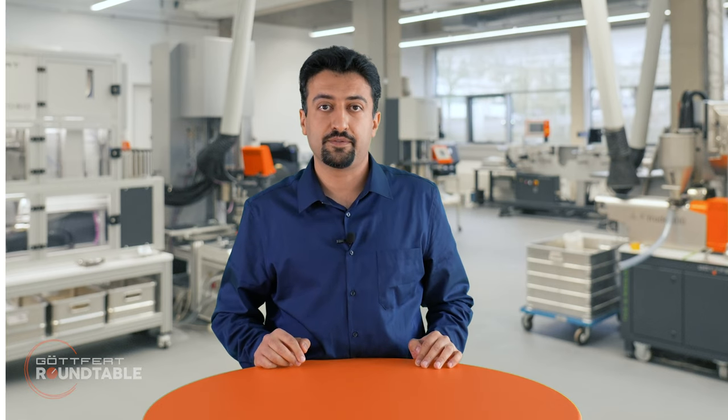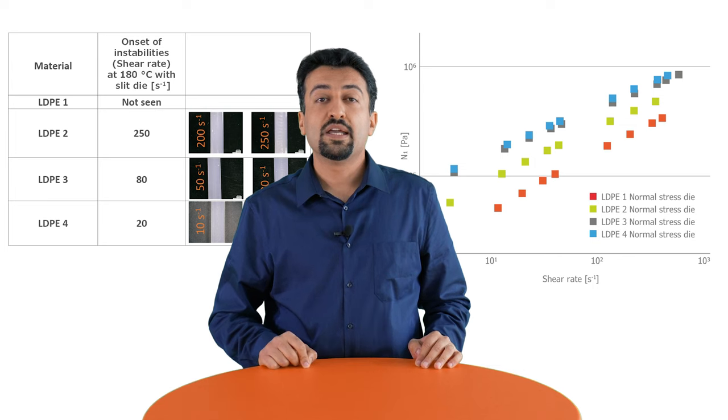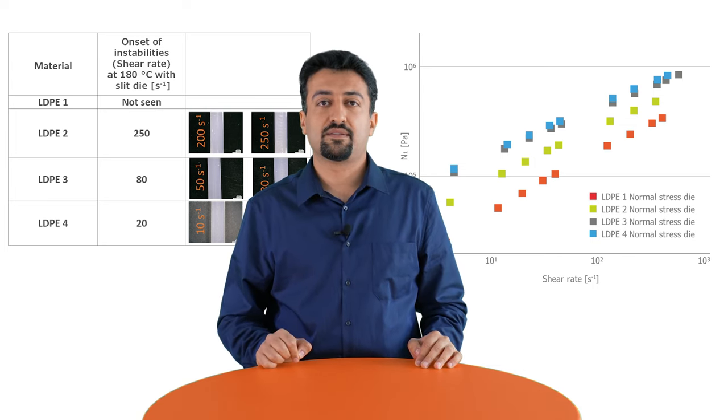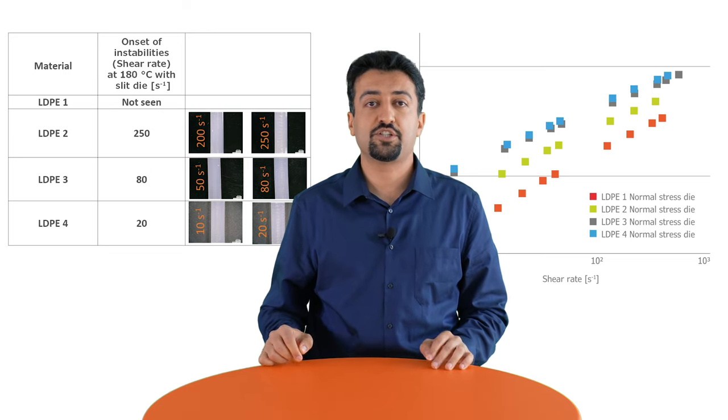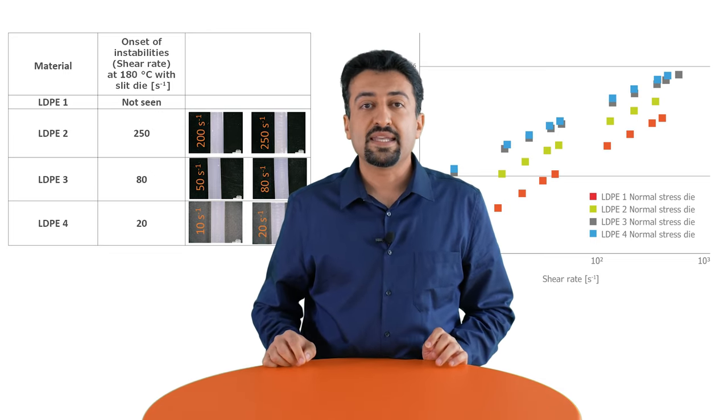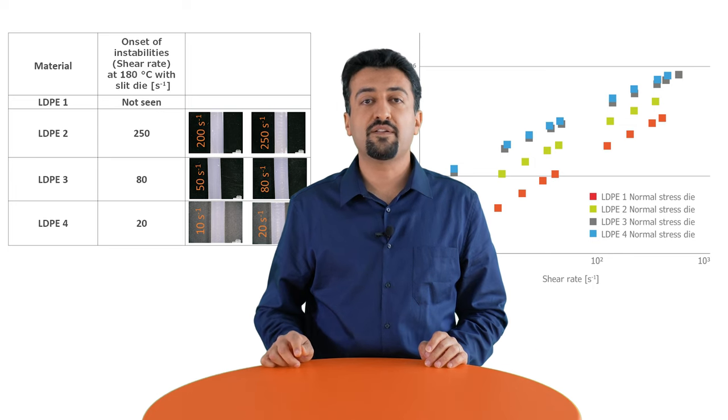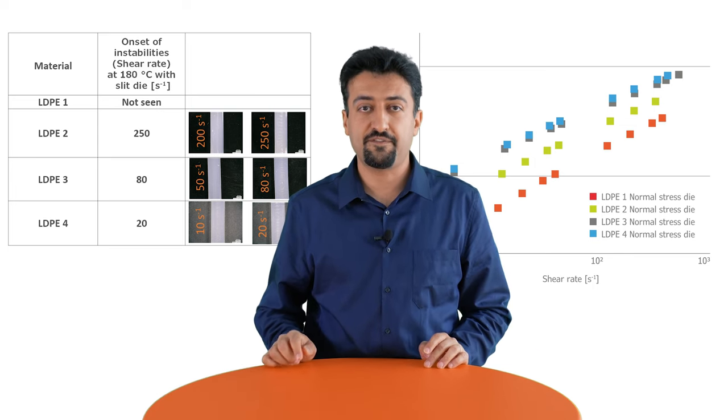As an example, four LDPEs are shown here. They show instabilities at different shear rates compared to the values of first normal stress difference versus shear rate. You can see that the material which has higher values of first normal stress difference shows instability at low shear rates.